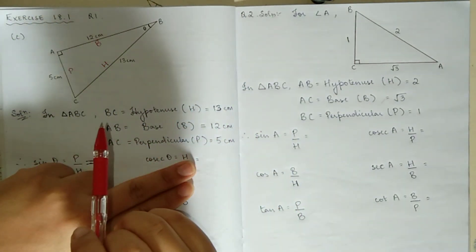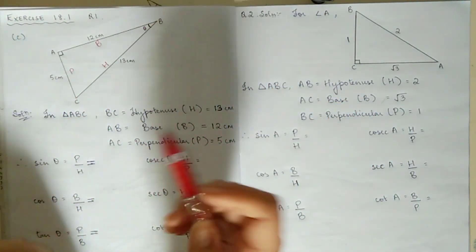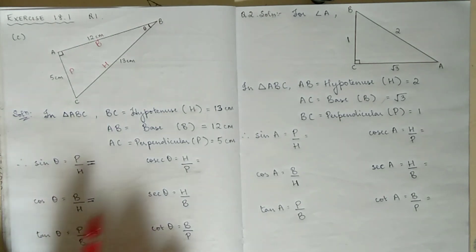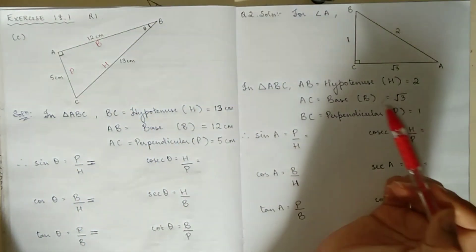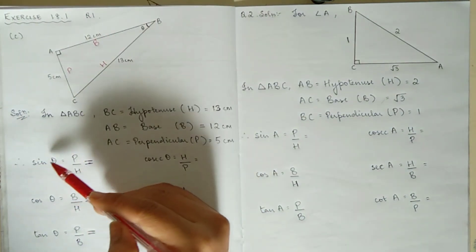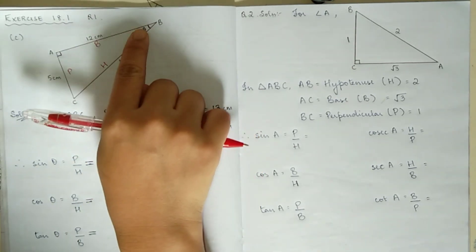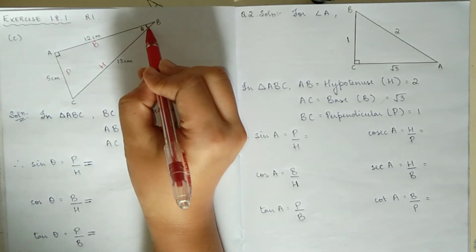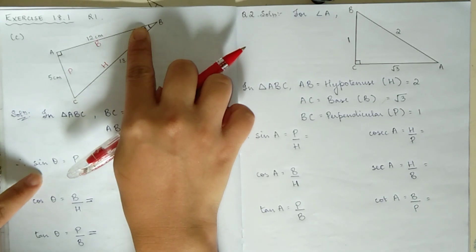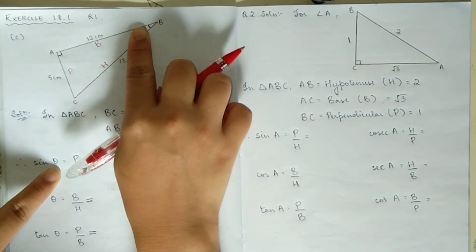The question is asking us to find the trigonometric ratios. We know there are 6 trigonometric ratios: sin, cos, tan, cosec, sec, and cot. If you want to see the formulas, you can refer to the trigonometric ratios table.